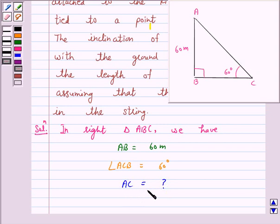To determine AC we will choose a trigonometric ratio which involves both AB and AC. So we will choose the trigonometric ratio as sine 60 or cosecant 60 as the ratio involves both AB and AC.